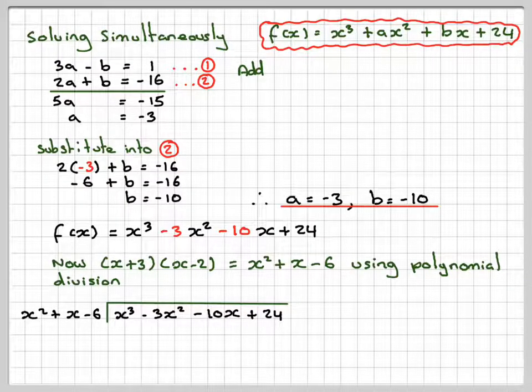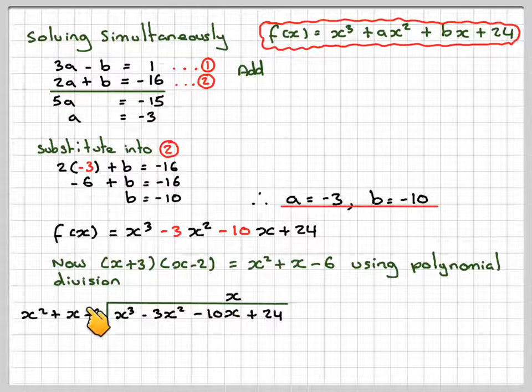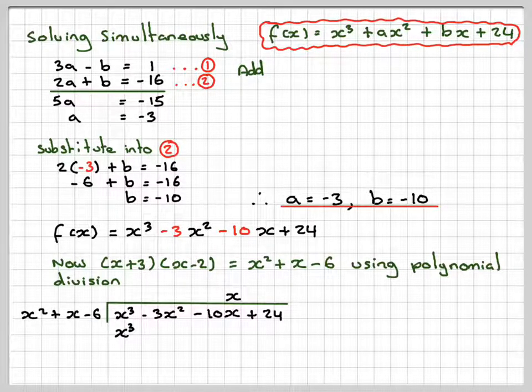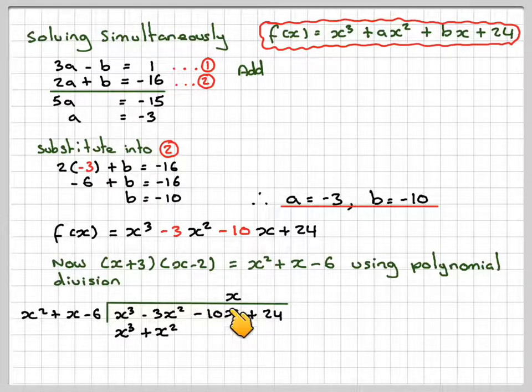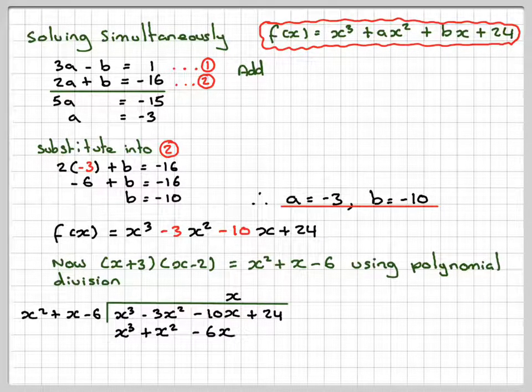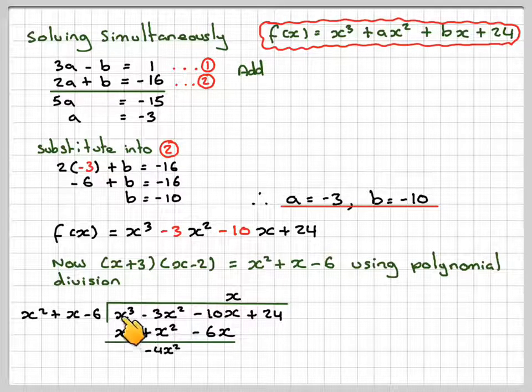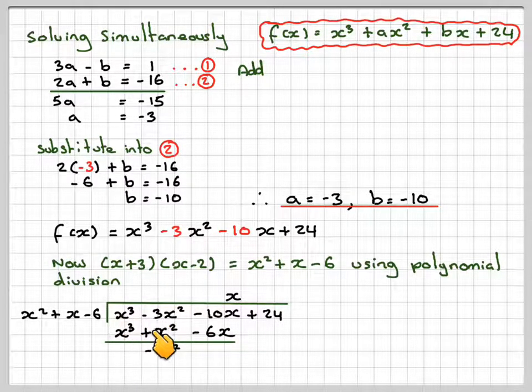x³ divided by x² gives me x. x times x² gives me x³, x times x gives me x², x times -6 gives me -6x. Doing this subtraction, nothing from here. -3x² minus 1x² gives me -4x².